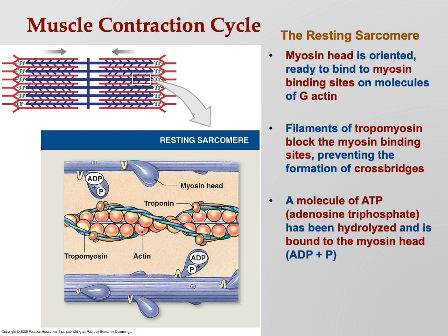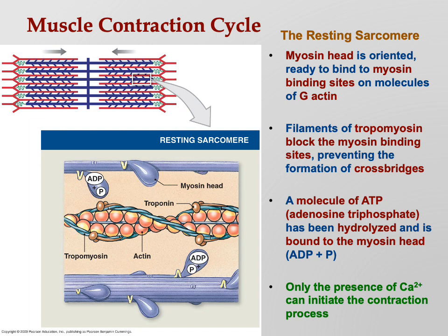ADP is adenosine diphosphate - basically the same molecule as ATP except instead of having three phosphates it now only has two, because one phosphate already broke off. So on the myosin head you can see ADP plus P, meaning the ATP has already been hydrolyzed into ADP and inorganic phosphate. That's what the sarcomere looks like at rest.